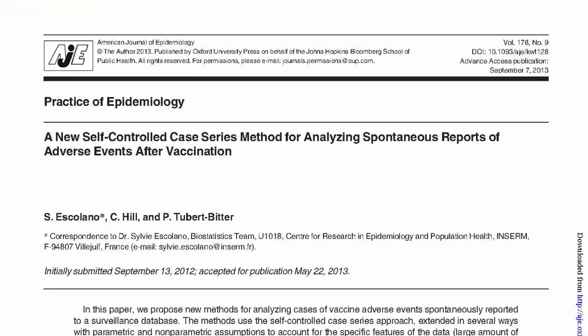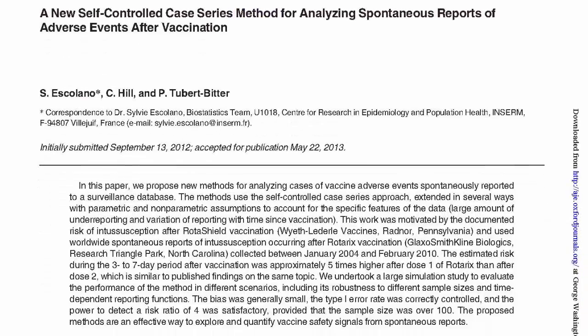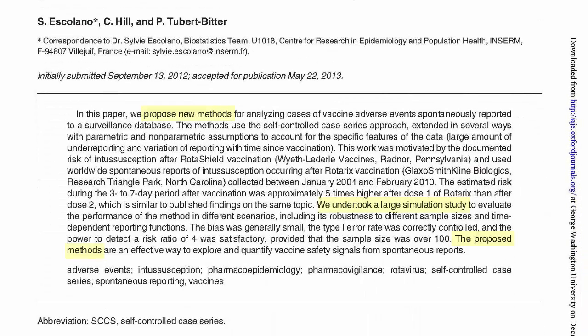This is an example of a methodological article. The authors propose a new method for analyzing cases of vaccine adverse events. The word 'method' in the title provides a cue to the type of article, but reading the abstract will also alert you to the article type as well.